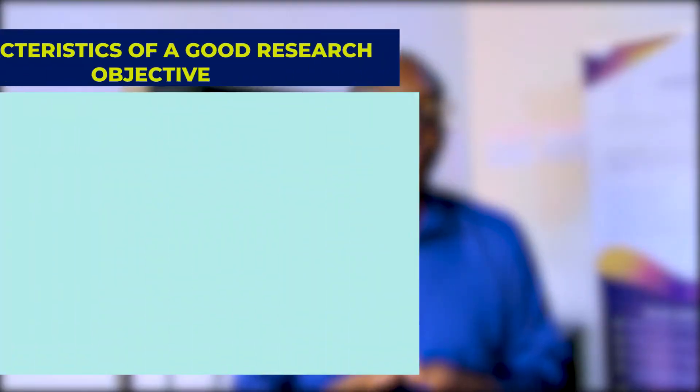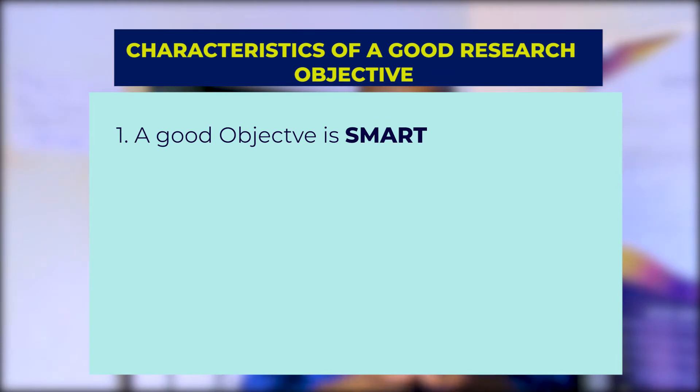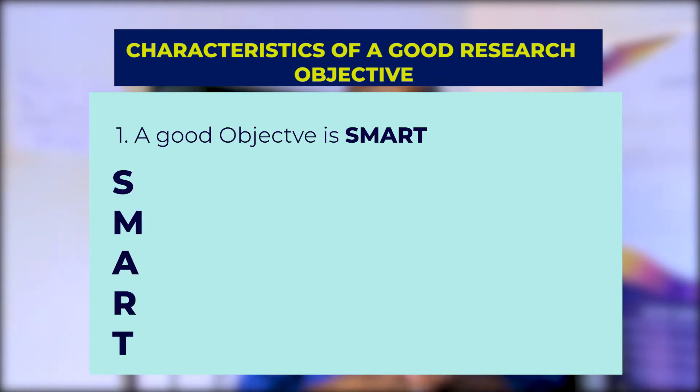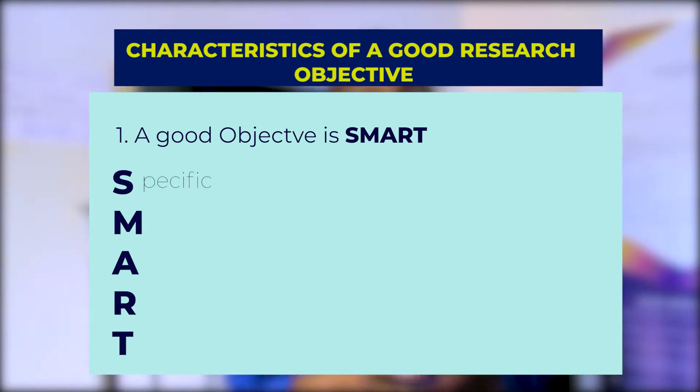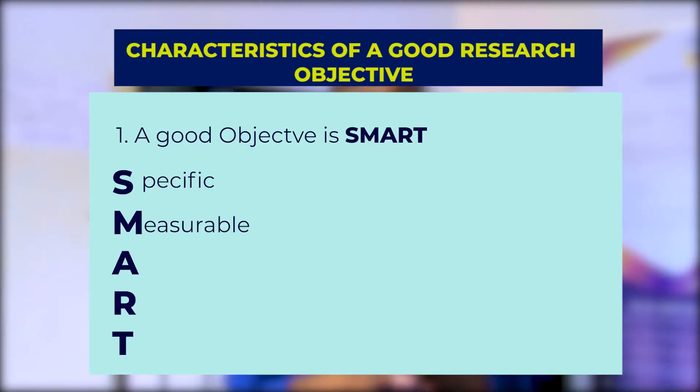How do you know you have a good objective? A good objective is SMART — Specific, Measurable, Attainable, Relevant, and Time-bound. Specific means your objective must be precise. For example, saying 'money' is too broad — it could mean salary, allowance, a gift, or a tip. You need to narrow it down to 'salary.' Measurable means you can quantify it — salary is measurable because you can get a payroll figure.